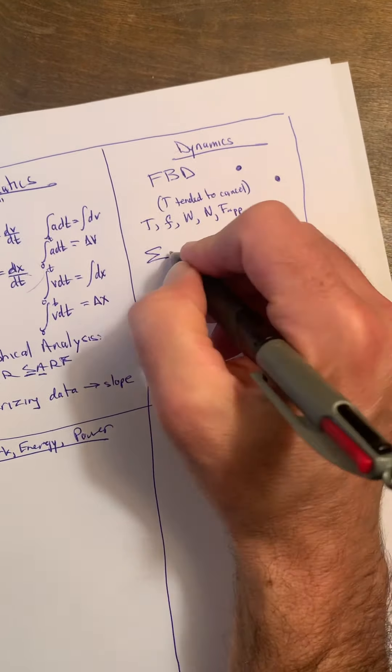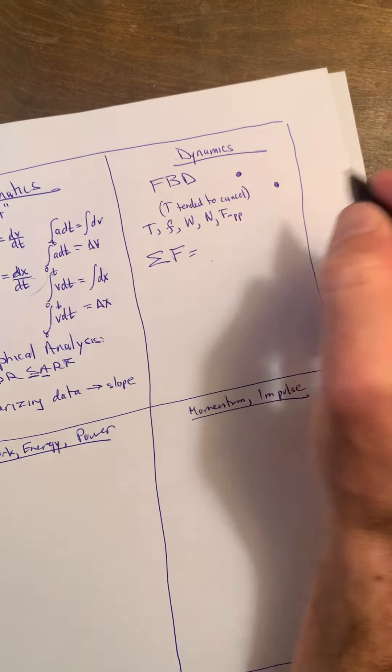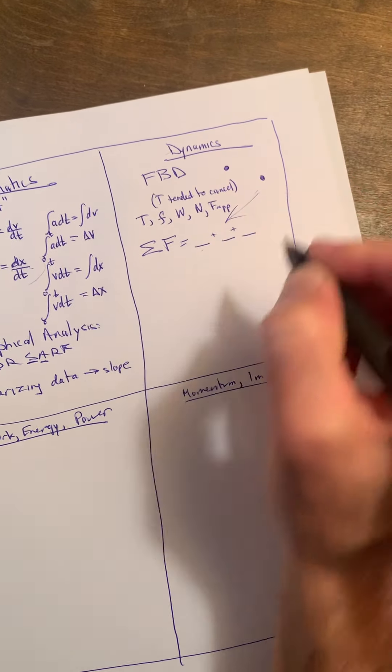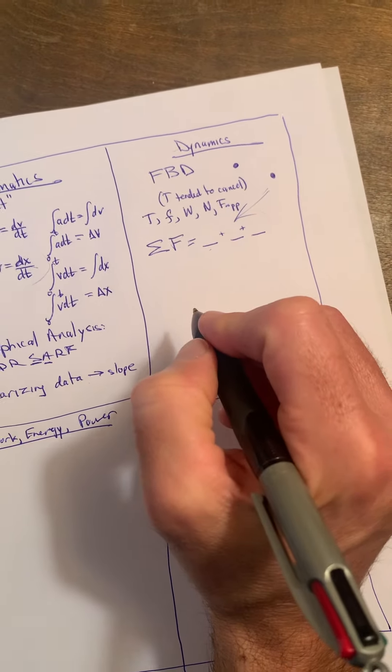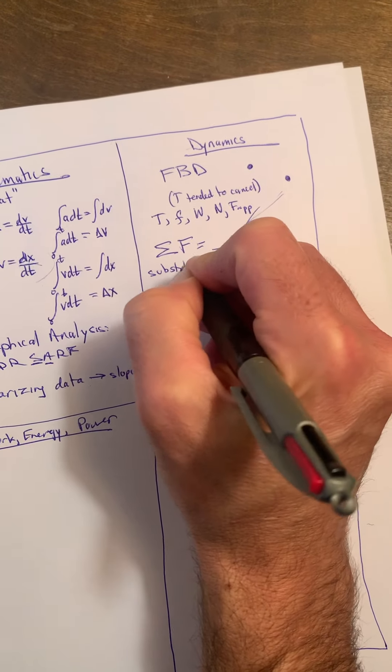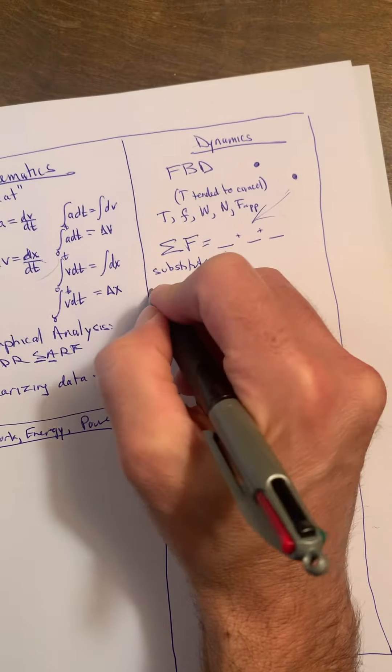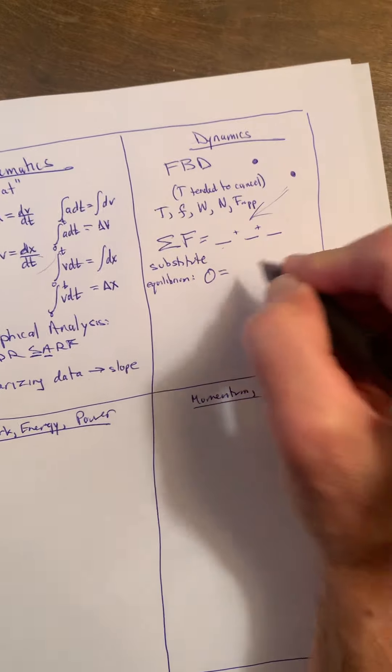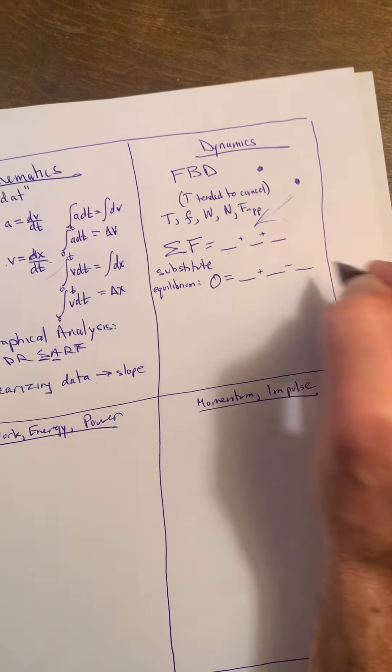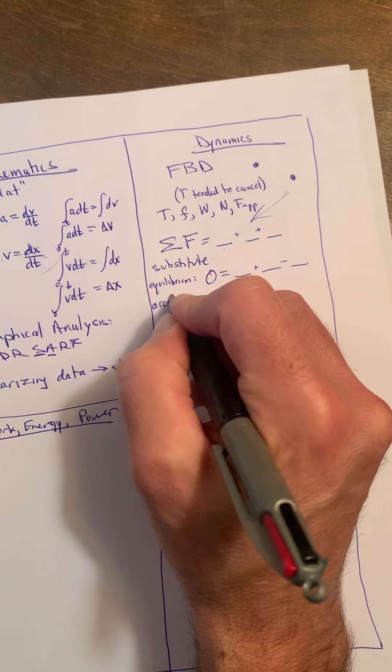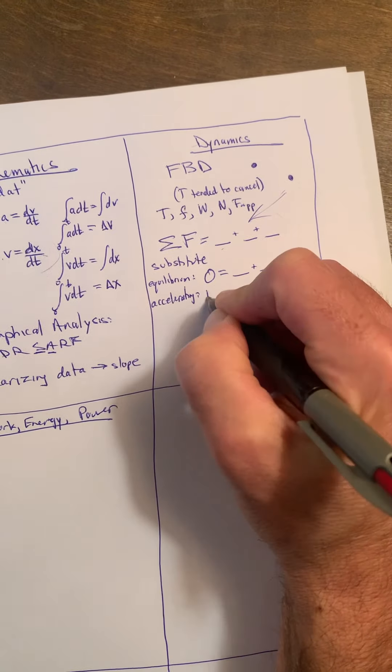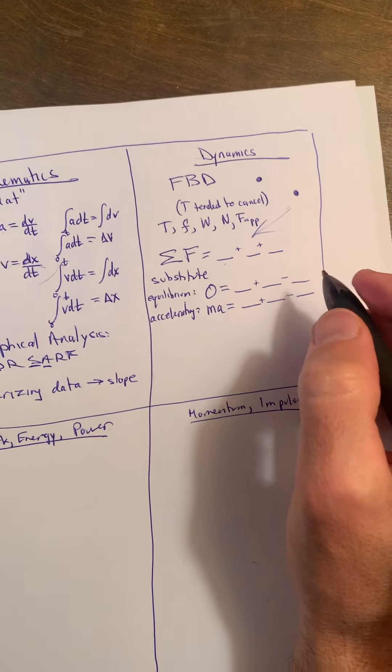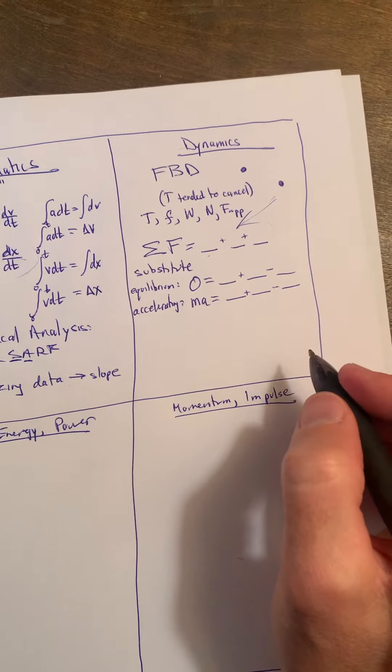Now once you have your free body diagram, you do a sum of forces. Sum of the forces equals, and you basically then put all your forces in here, add them together. And then in your substitution line, when you substitute, it depended on the scenario. If it was equilibrium, then this sum of the forces would then be zero equals whatever plus whatever minus whatever. If it were accelerating, so not equilibrium, then you would put ma on this side equals whatever plus whatever minus whatever.